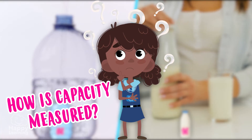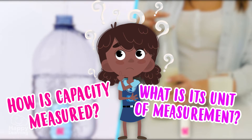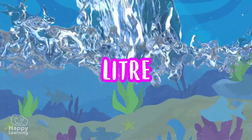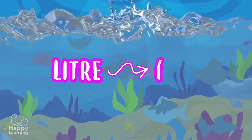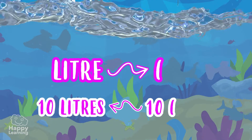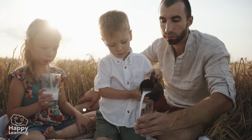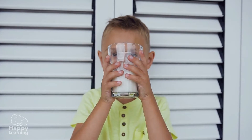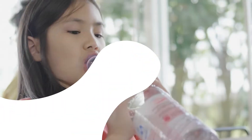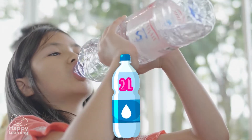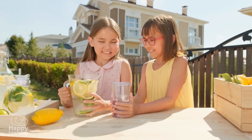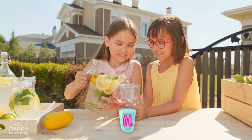How is capacity measured? What is the unit of its measurement? Well, the most important unit with which capacity is measured is the liter, and it is represented by the letter L. Thanks to the liter, we can know how much liquid we have in each of our containers. In this bottle of water, we can fit 2 liters. In this bottle of oil, 1 liter. And in this glass, less than a liter fits.